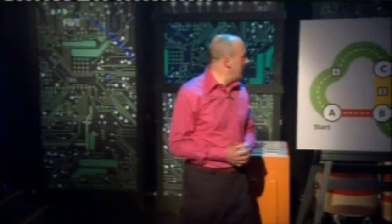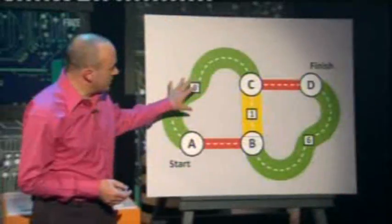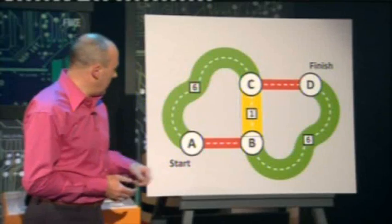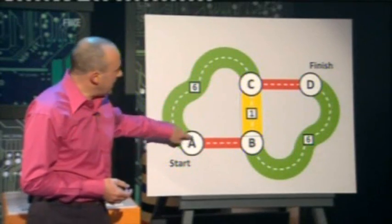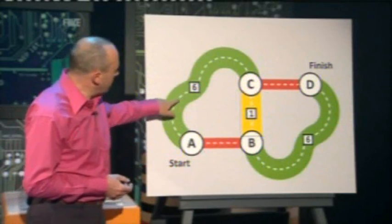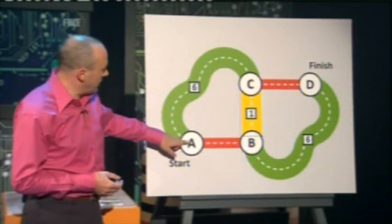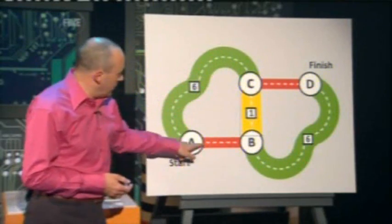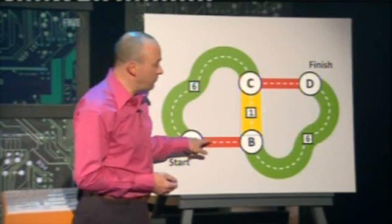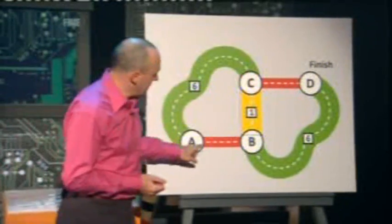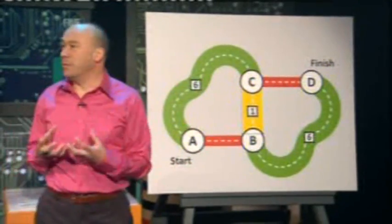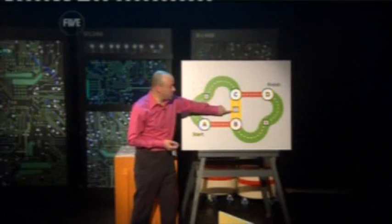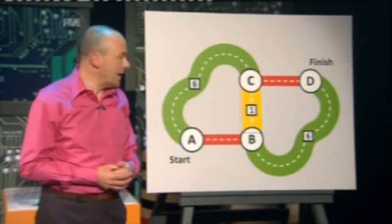Here's a surprising example that looks at the flow of cars along roads between four cities. Cars are going to try to get from City A across to City D. This green road is quite long — it takes six minutes to travel from A to C, and likewise from B to D. The red road is much shorter but quite narrow, so it becomes congested: the travel time along a red road equals the number of cars using it. Finally, the yellow road is very fast — it only takes one minute to travel along it.